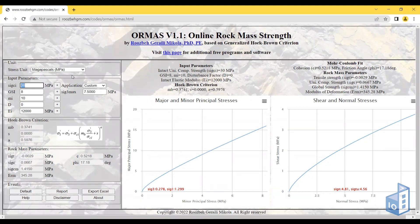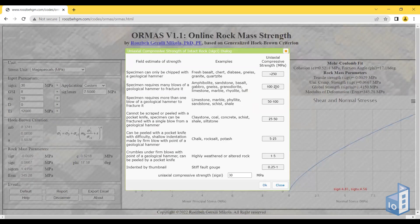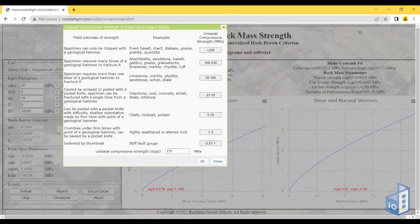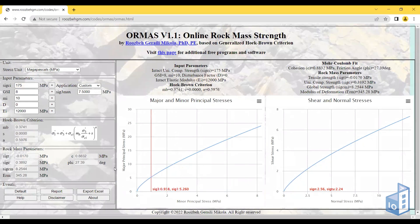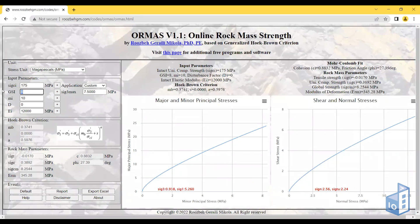You'll see that the charts on the right are automatically updated. The axes change and you have an updated value. The GSI changed from 8 to 50, you see the update. Here you have sigma 1 and here sigma 3.